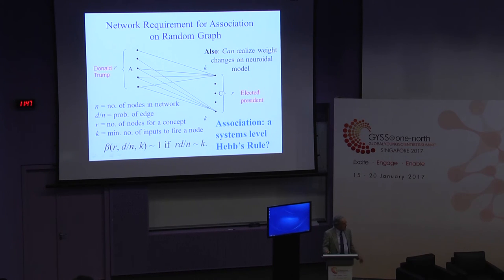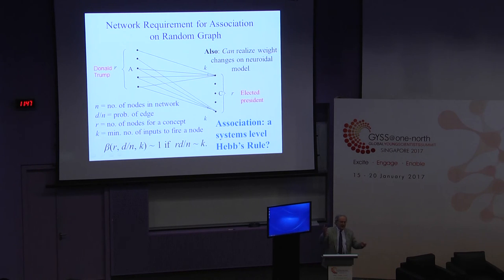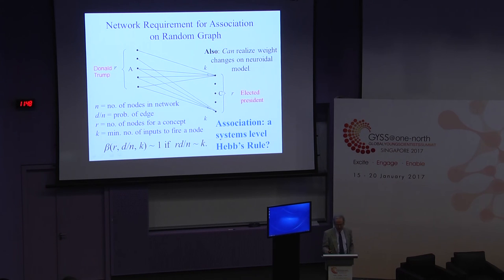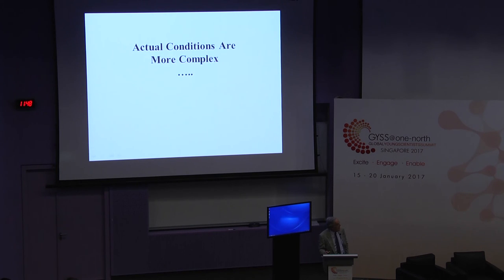For neuroscientists, the Hebbian rule is a very basic primitive notion: you've got two neurons connected, and depending on the activity of both, the connection is strengthened or weakened. In some sense, this primitive is a systems-level version of that. We're saying that in the brain, the real primitive is that you have big sets of neurons representing concepts, and it's the joint activity of them all which produces the results you want — not single neurons by themselves.